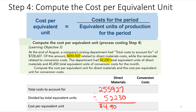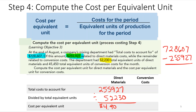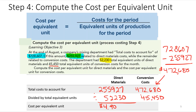For conversion costs, we calculate: $728,607 − $255,927 = $472,680. Dividing by 45,450 equivalent units of conversion costs gives a cost per equivalent unit of $10.40.